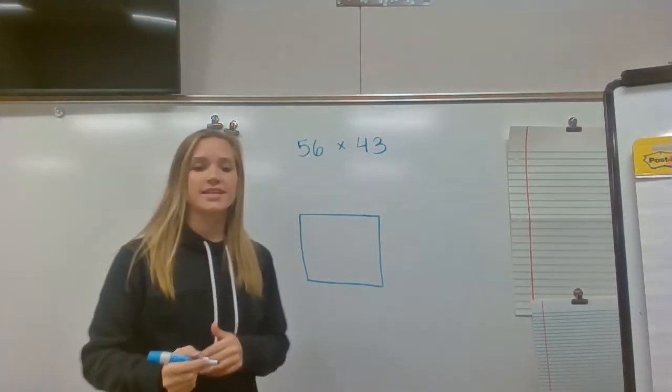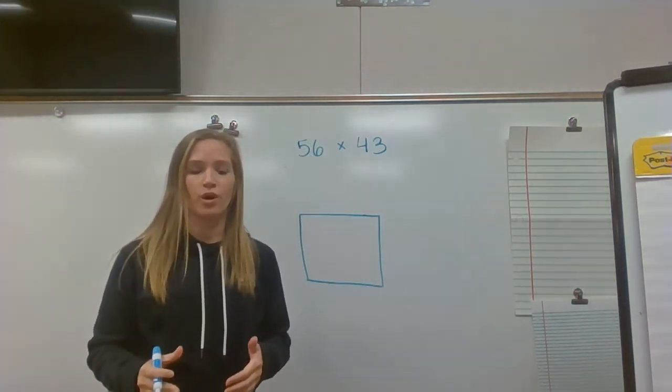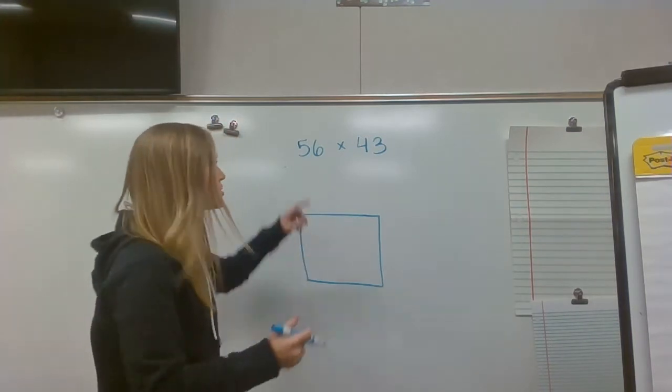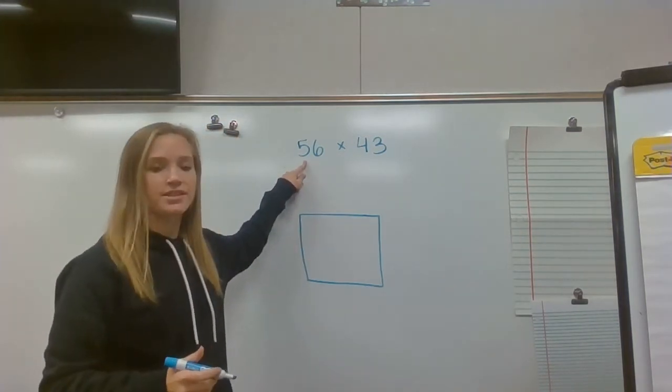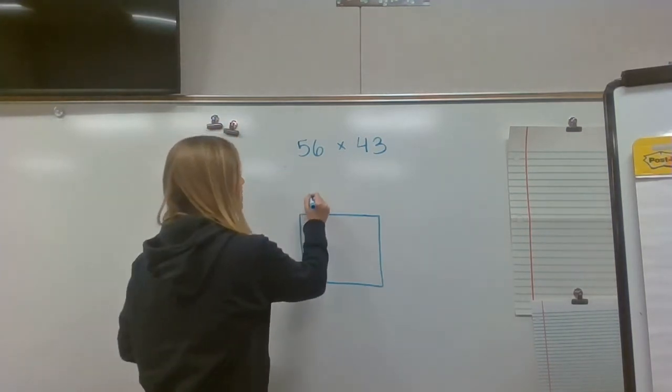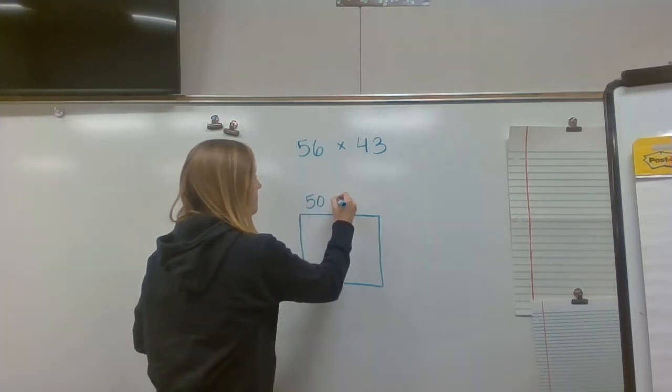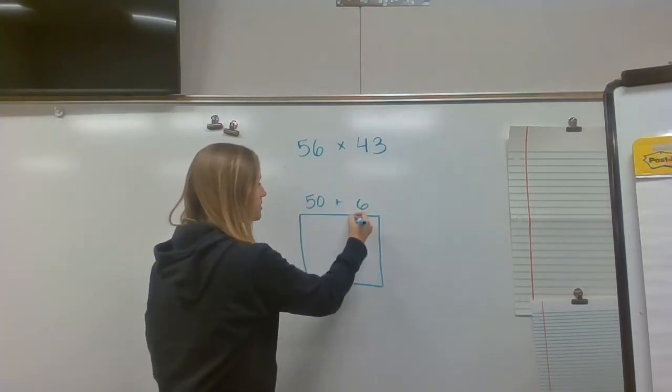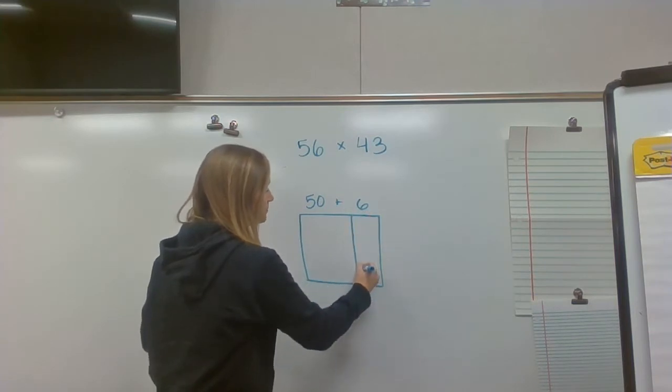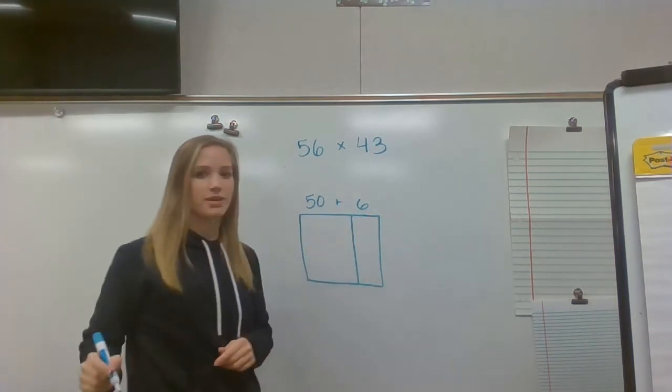Now, the next thing I need to do is do expanded form and figure out my place values. So for my first number, I have 56. So in expanded form, that's going to be 50 plus 6. Now, I know I don't need as much room for my ones place, and then I have my tens place.